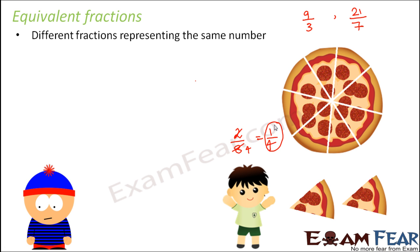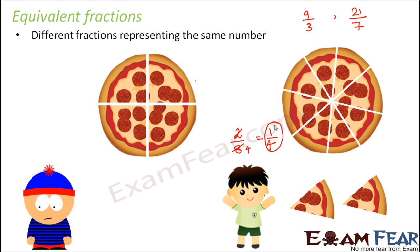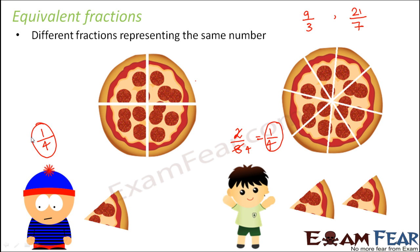In another scenario, another boy is hungry and he has a pizza. Instead of dividing it into 8 equal slices he divides it into 4 equal slices, and then he ate 1 slice. So he ate 1 slice out of 4 slices, which is 1 fourth of the pizza. So whether this boy ate 2 slices out of 8 or that boy ate 1 slice out of 4, it is all the same — because 2 by 8 and 1 by 4 are equivalent fractions.